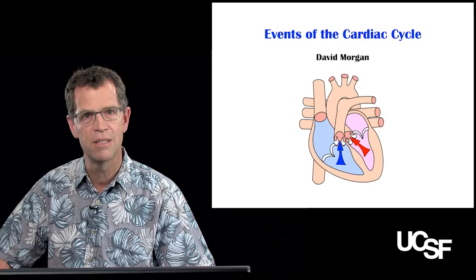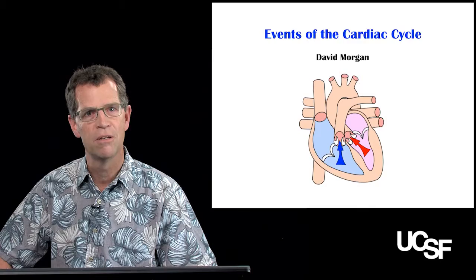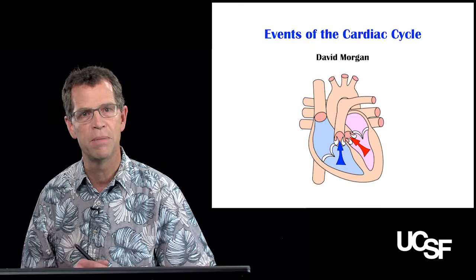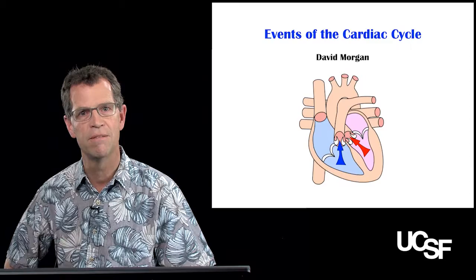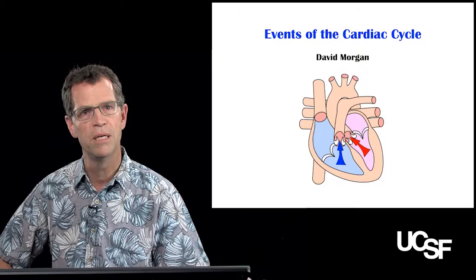Hello everyone. My name is Dave Morgan. I'm from the Department of Physiology and today we're going to talk about the events of the cardiac cycle. As you've learned up to this point, there are a number of interesting electrical events that occur in the heart when an action potential is generated in the pacemaker cells in the atria, makes its way across the atria and down into the ventricles, causing contraction of those two chambers.